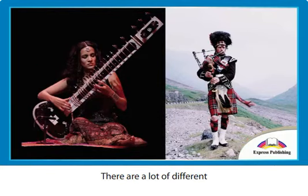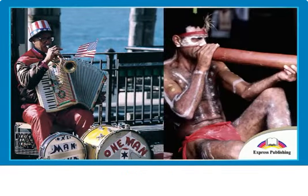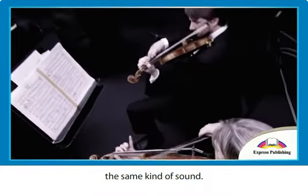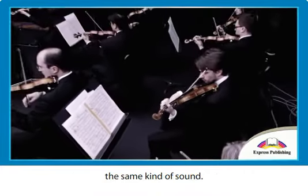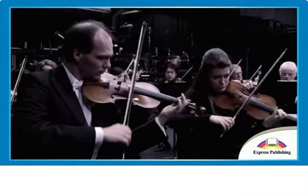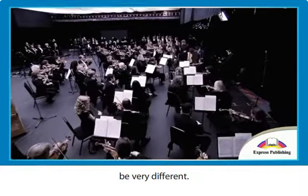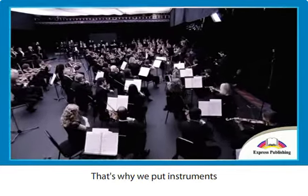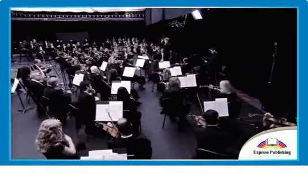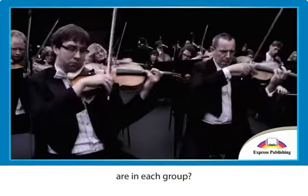There are a lot of different musical instruments. Some instruments have got the same kind of sound. Some instruments look the same too. But instruments can also be very different. That's why we put instruments into different groups. So, what groups are there? And which instruments are in each group?